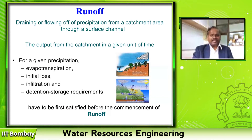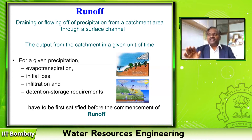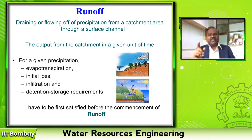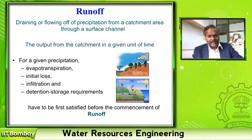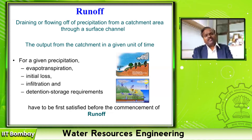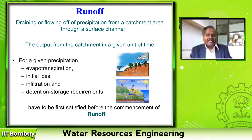When there is rainfall, after all the abstractions — all the losses such as infiltration, evaporation, evapotranspiration, and initial losses — if the rainfall intensity is still more than all these losses, the water starts building up on the ground level. But it cannot build up like a column of water. Once it builds up to a particular height, the slope of the land as well as gravitational force forces the water to move from a higher level to a lower level, and at that time the water flows as a sheet — that is why we call it sheet flow.